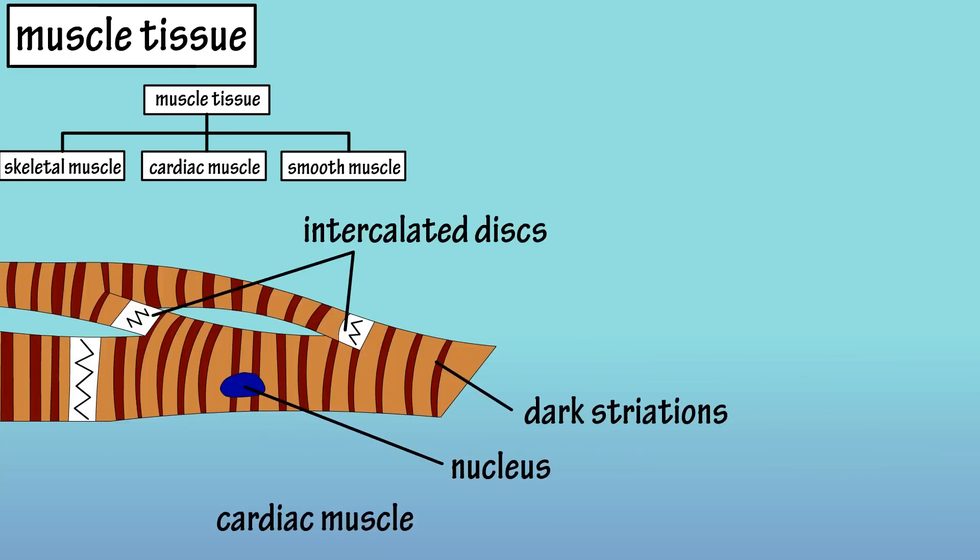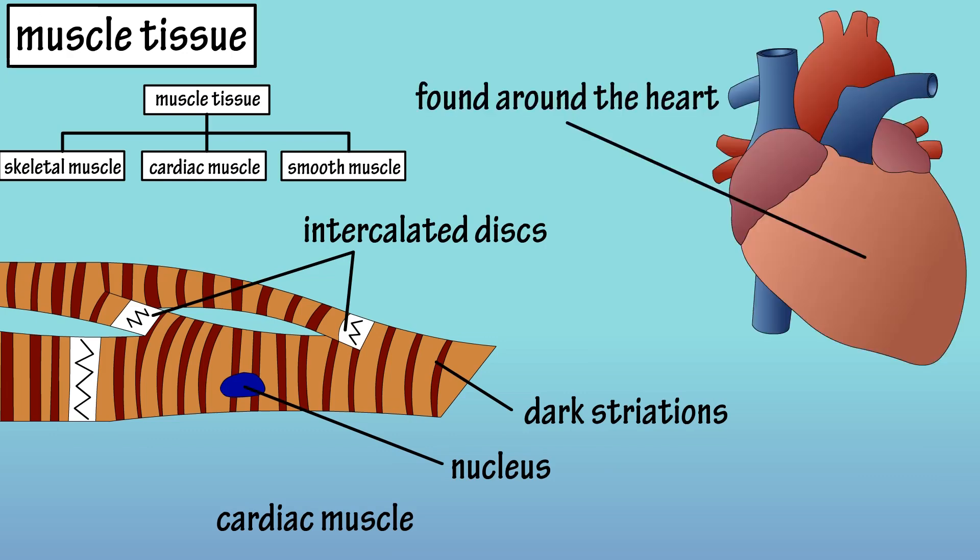Cardiac muscle also has striations, but they are short and often branching. Cardiac muscle cells contain one or two nuclei and are connected by intercalated discs which strengthen the connection between cells and allow them to contract as a unit. Cardiac muscle is involuntary, is located in the walls of the heart, and functions to pump blood through the heart.